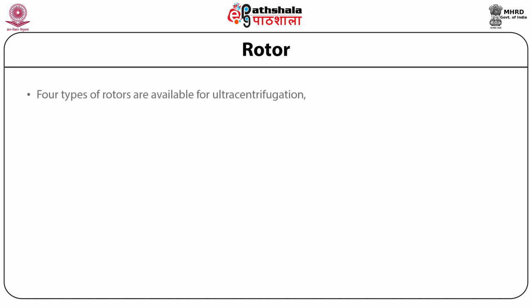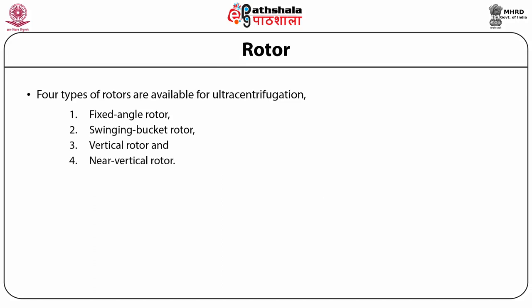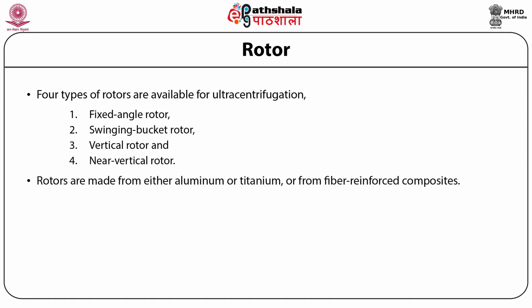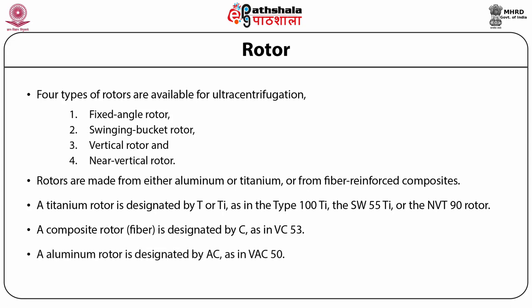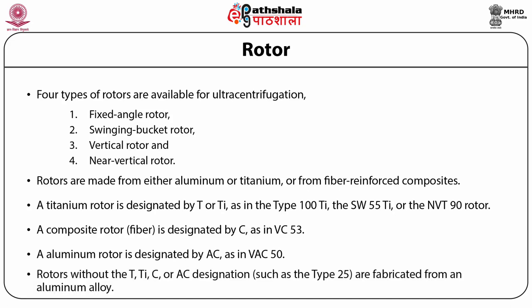There are four types of rotors: fixed angle rotor, swinging bucket rotor, vertical rotor, and near-vertical rotor. Rotors are made of either aluminum, titanium, or fiber-reinforced composites. Titanium rotors are designated with 'Ti' (e.g., Type 100 Ti or SW50 Ti). Composite rotors are designated by 'C' (e.g., VC53). Aluminum rotors are designated by 'AC' (e.g., VAC50). Rotors without designation such as Type 25 are fabricated from aluminum alloy.